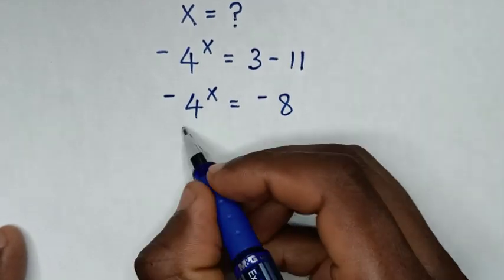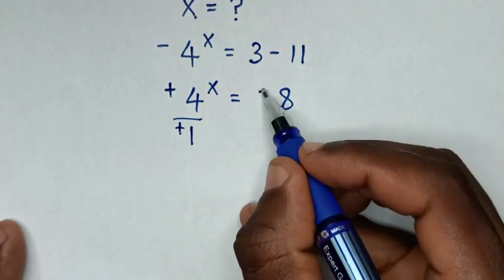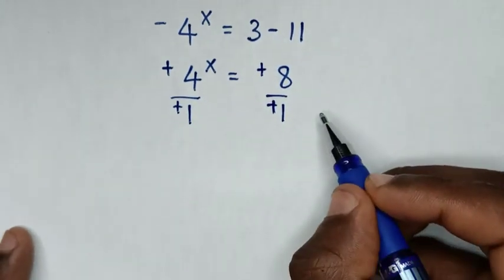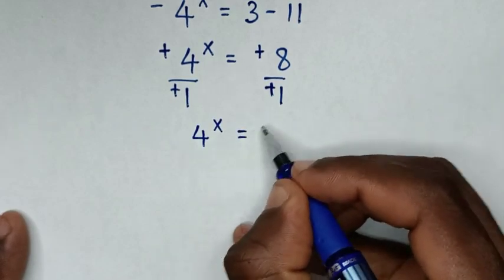Then we divide by negative 1 in both sides, so this will be positive and this will be positive, so it will be 4 power x is equal to 8.